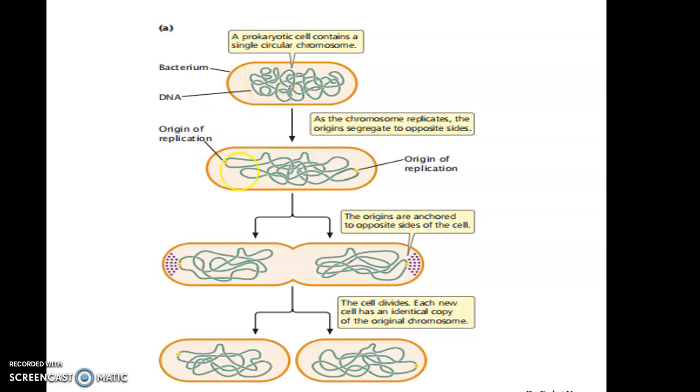This figure shows the process of replication in prokaryotes. Here is the DNA within the bacterial cell, and this yellow dot indicates the origin of replication.